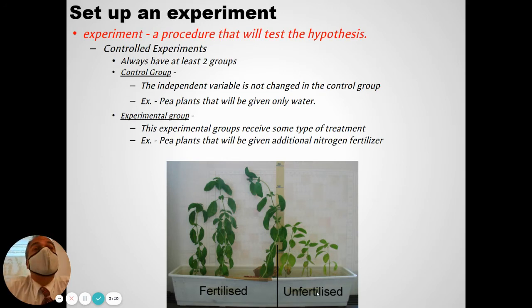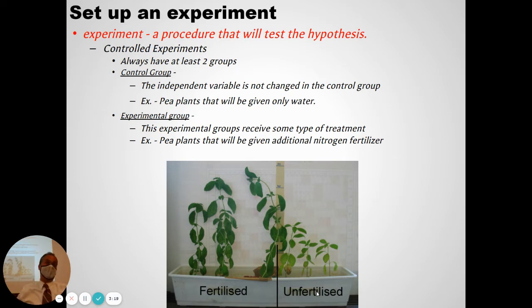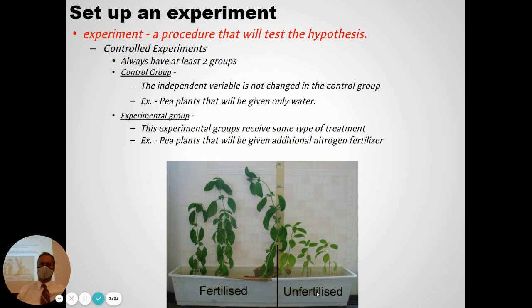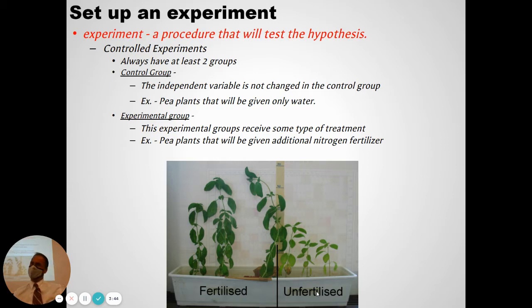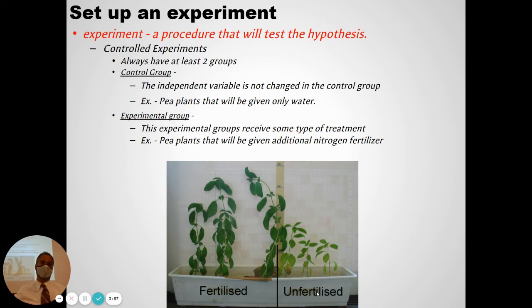When we are doing an experiment, we usually have multiple groups. We don't just have a single group — we usually have a control group. The control group is the one we use for comparison; you sort of keep it under normal conditions, try not to change anything. Then in the experimental group, when you do change something, you can compare it to the control and say, okay, under normal conditions this is what happens, but when I change this, here's how the results change.